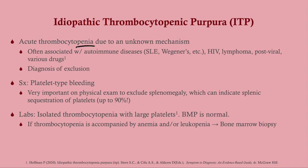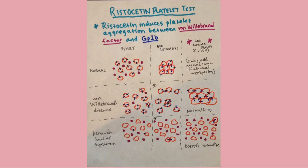ITP is an acute thrombocytopenia due to an unknown mechanism — this is a quantitative platelet issue, whereas the previous three were qualitative. It is often associated with autoimmune diseases and is thought to have an autoimmune mechanism, but we don't know for sure. It is a diagnosis of exclusion. Symptoms are platelet-type bleeding. On physical exam, it's very important to exclude splenomegaly, which can indicate splenic sequestration — you can sequester up to 90% of your platelets. Labs show isolated thrombocytopenia, possibly with large platelets. If thrombocytopenia is accompanied by anemia and leukocytosis or leukopenia, consider bone marrow malignancy and get a bone marrow biopsy.